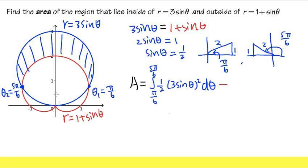Then subtract the inner part, which is the integral from π/6 to 5π/6. We still have 1/2, and this time inside is (1 + sin(θ))² dθ.